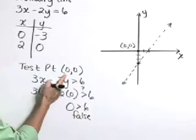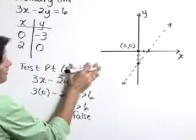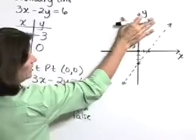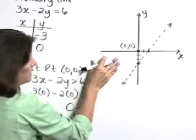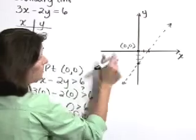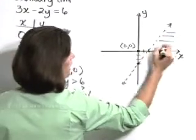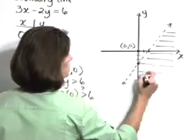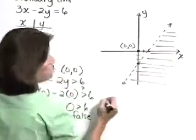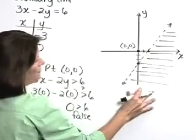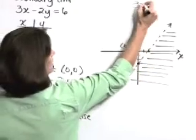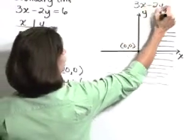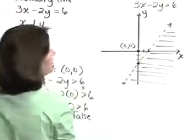Therefore, the origin does not satisfy our inequality, indicating that none of the points on this side of the boundary line satisfy the inequality. The points on the other side do. Here we have a graph of our solution region to the inequality 3x minus 2y is greater than 6.